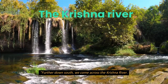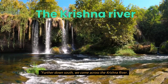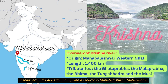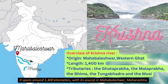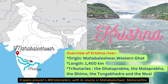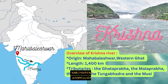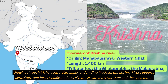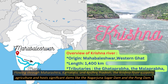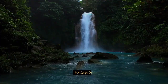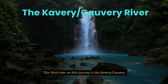Farther down south, we come across the Krishna river, which spans around 1,400 kilometers with its source in Mahabaleshwar, Maharashtra. The famous tributaries are Ghataprabha, Malaprabha, Bhima, Tungabhadra, and Musi, and so on. Flowing through Maharashtra, Karnataka, and Andhra Pradesh, the Krishna river supports agriculture and hosts significant dams like the Nagarjuna Sagar Dam and the Tungabhadra Dam.